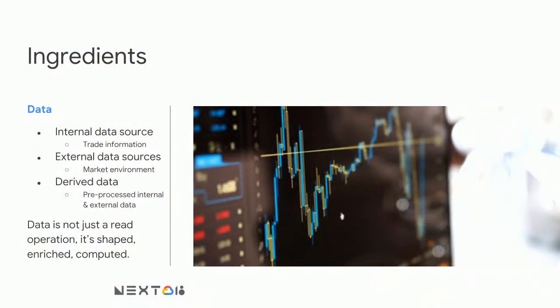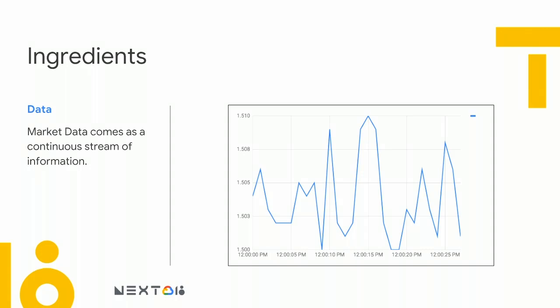In terms of data, there are quite a few sources. There's internal data sources — trades happening within the bank. There's external data sources from market environments. There's derived data where you've taken underlying information, done some processing, and got new data to distribute — for example, yield curves created from swaps and deposit information. And the data doesn't come in a nice static file — it's streamed, continuously updated. This is where Dataflow's capability of doing stream processing on incoming data sets becomes interesting.